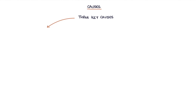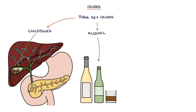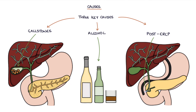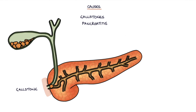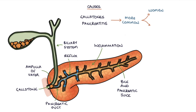The three key causes of pancreatitis to remember are gallstones, alcohol, and ERCP procedures. Gallstones pancreatitis is caused by gallstones getting trapped at the end of the biliary system at the ampulla of Vater, and blocking the flow of bile and pancreatic juice into the duodenum. The reflux of bile into the pancreatic duct and the prevention of pancreatic juice containing enzymes from being secreted results in inflammation in the pancreas. Gallstones pancreatitis is more common in women and older patients.